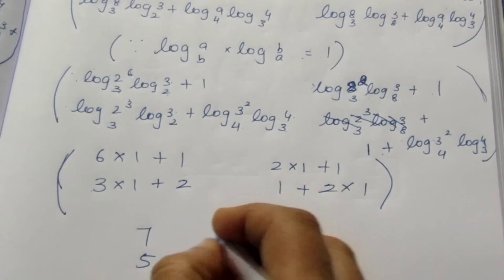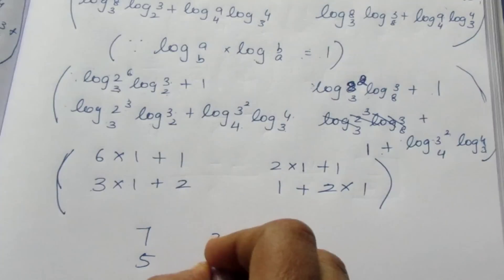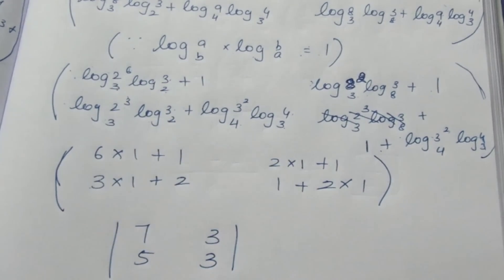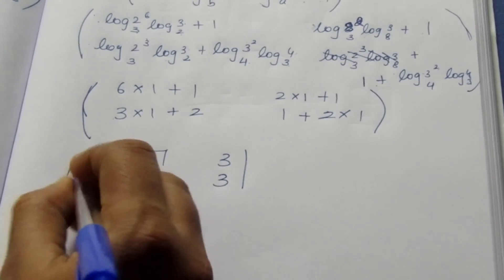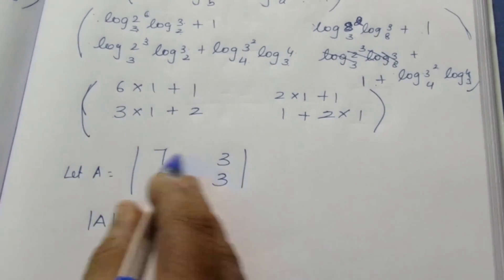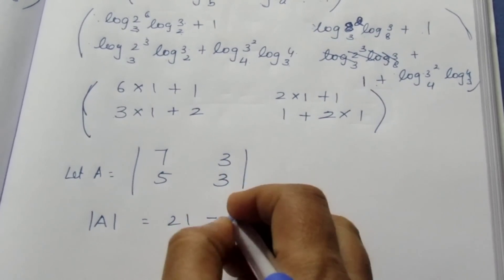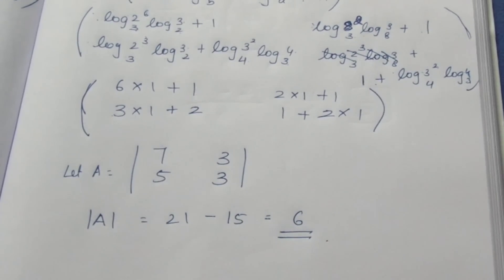2 times 1 plus 1 is 3. 1 plus 2 is 3. This is the determinant. Let A equal — cross multiply minus multiply: 21 minus 15, this is equal to 6. So the value, the final answer is 6. Thank you.